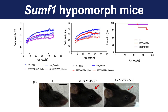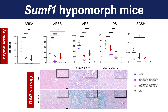By gross appearance, these mice had some craniofacial dysmorphism, pointed by the arrow, compared to the control mice. We then looked at the enzyme activity of the different sulfatases, and they were severely reduced. You can see arylsulfatase A, arylsulfatase B, arylsulfatase L, and so on — enzyme activities that are all reduced in the two strains of mice compared to wild-type mice.